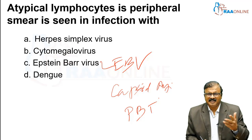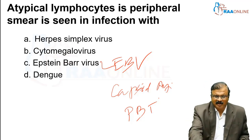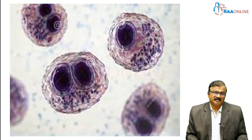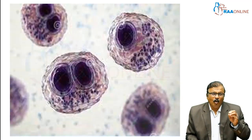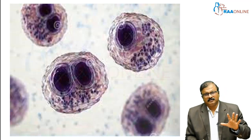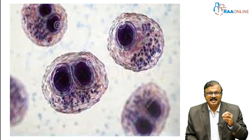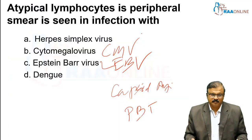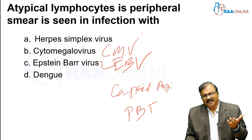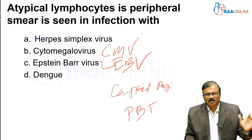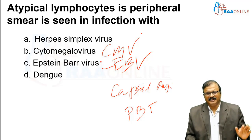Herpes Simplex virus — nothing special in peripheral smear. In Cytomegalovirus, what is seen are owl-eyed nuclei — owl-eyed nucleated lesions — which are seen in CMV infection. In Dengue, there are atypical lymphocytes, but more commonly there will be thrombocytopenia and leukopenia. That is what is common with Dengue.